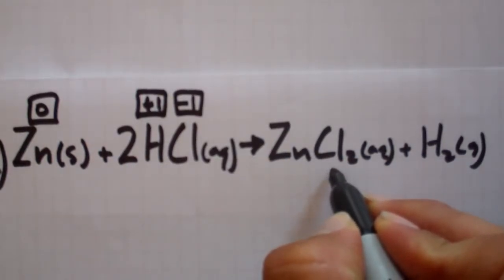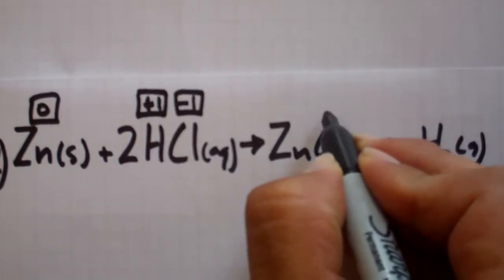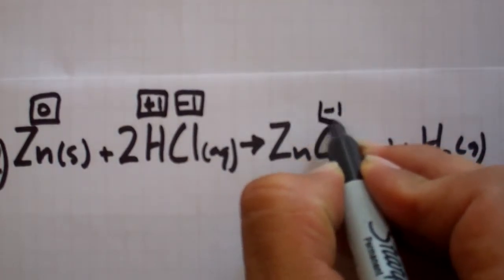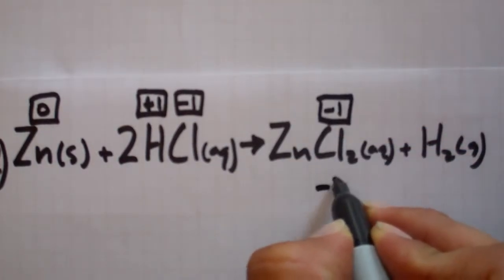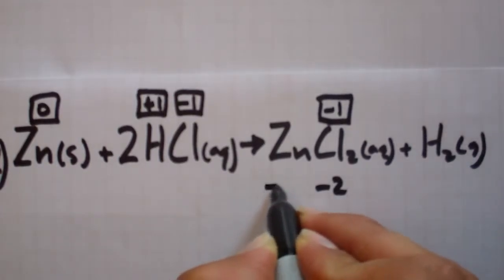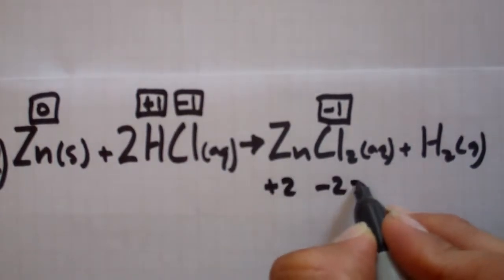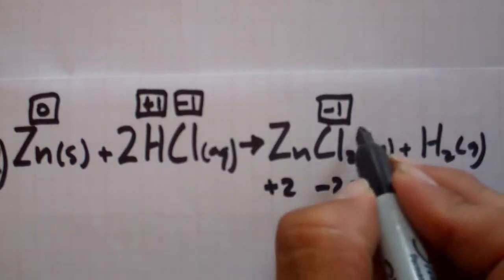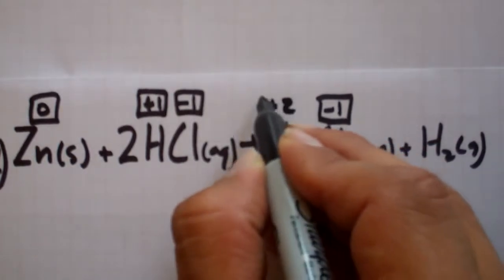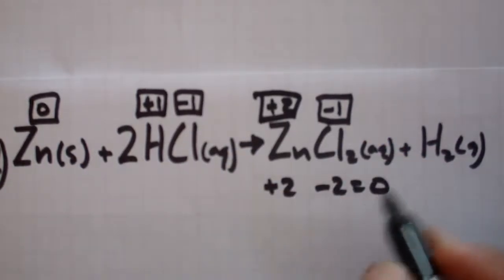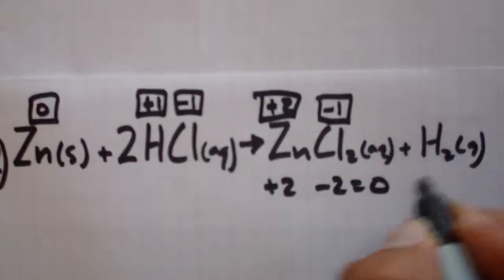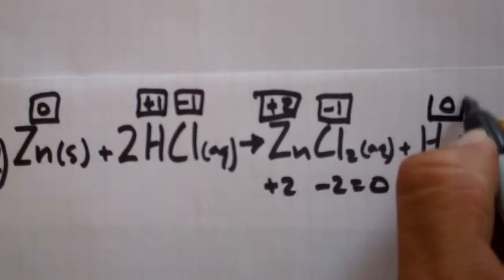Over here, the zinc chloride. Cl is chlorine, is minus 1. Since there's 2 of those, that's negative 2. So what does this have to be? That's right, plus 2, so it equals 0. There's no charge here. And hydrogen gas by itself, that is a 0. Remember, this is the elemental form of hydrogen.